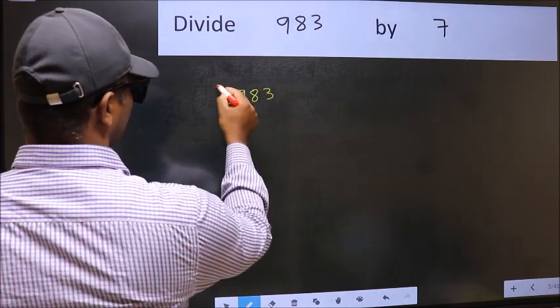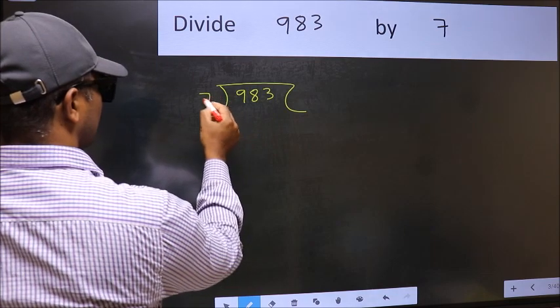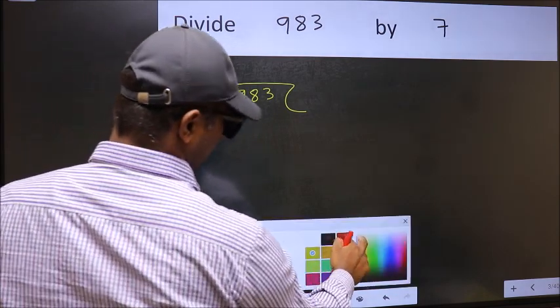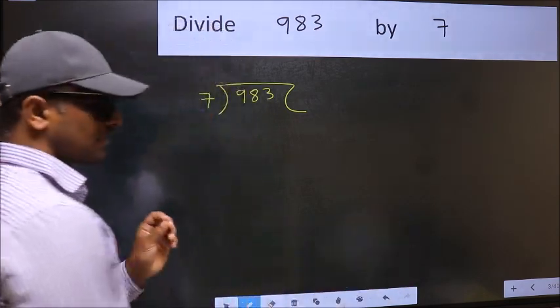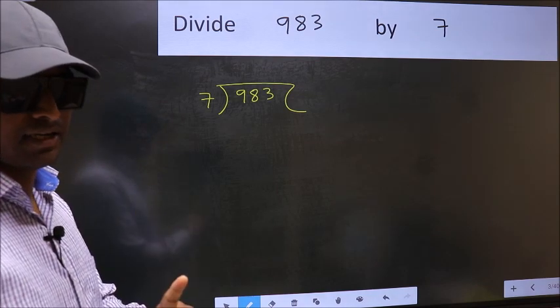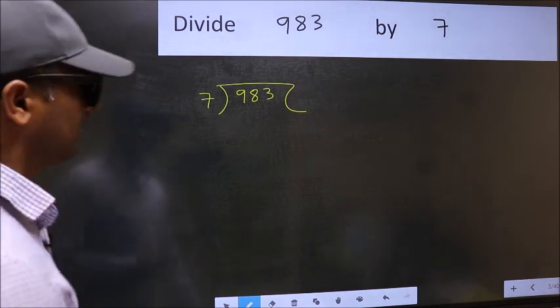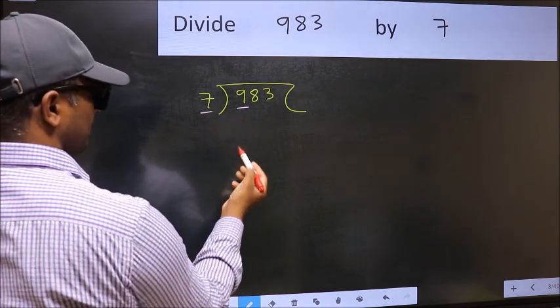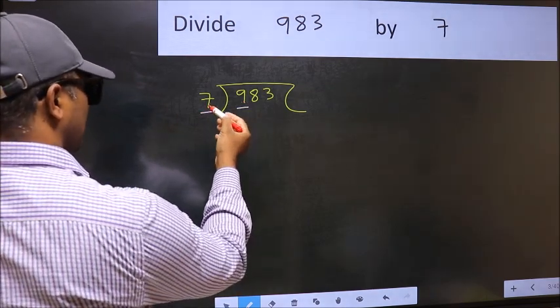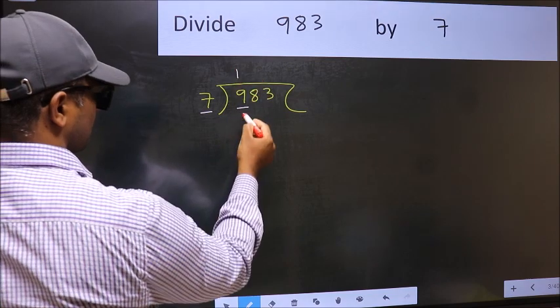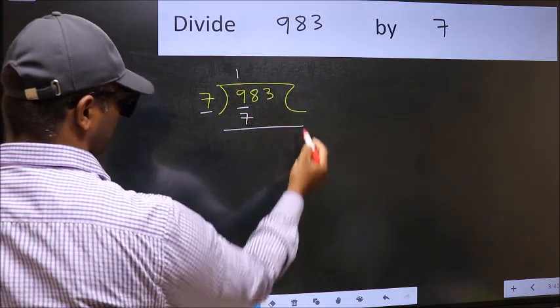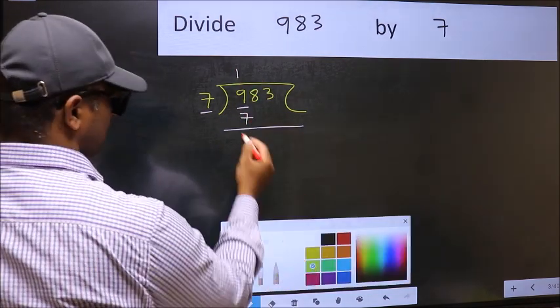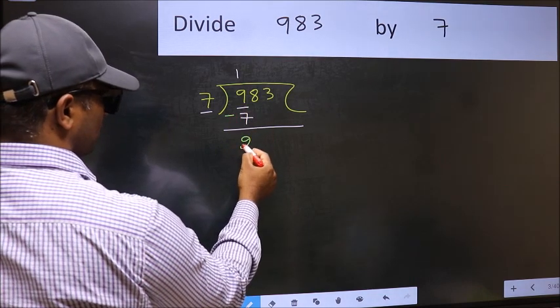983 and 7 here. This is your step 1. Next, here we have 9 and here 7. A number close to 9 in the 7 table is 7 once, 7. Now you should subtract. 9 minus 7 is 2.